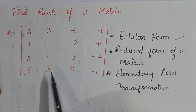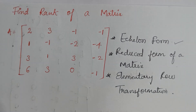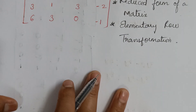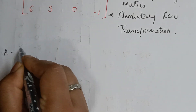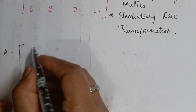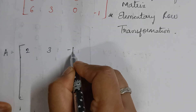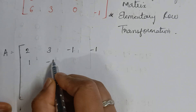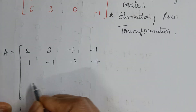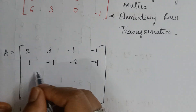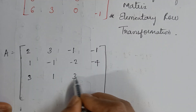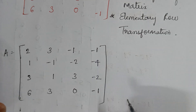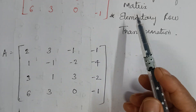Now let's try to find the rank of this matrix. I'll rewrite the question — it's a good habit to rewrite the question. So the given matrix is: 2, 3, -1, -1 / 1, -1, -2, -4 / 3, 1, 3, -2 / 6, 3, 0, -1.